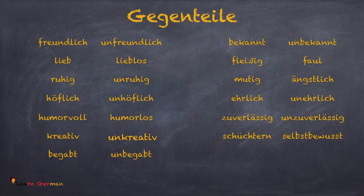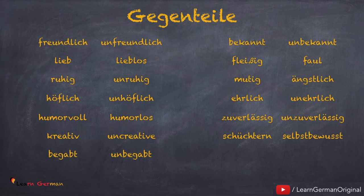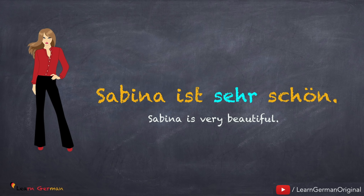Viele Gegenteile kann man mit dem Präfix 'un-' formulieren, aber nicht alle. Wenn wir über Charaktereigenschaften von einer Person sprechen, können wir auch Adverbien benutzen. Zum Beispiel: Sabine ist sehr schön. 'Sehr' ist ein Adverb. Adverbien geben uns mehr Informationen über das Adjektiv. Wir sehen andere Beispiele.